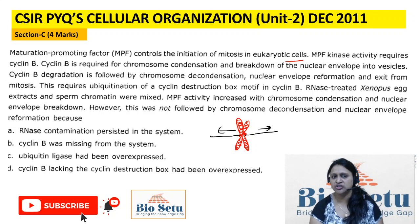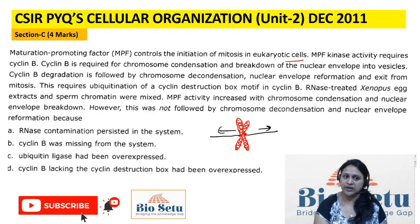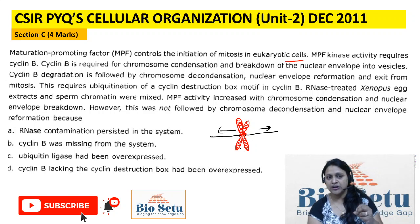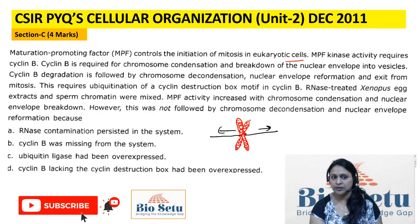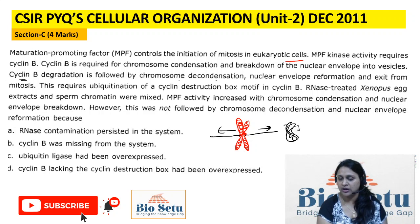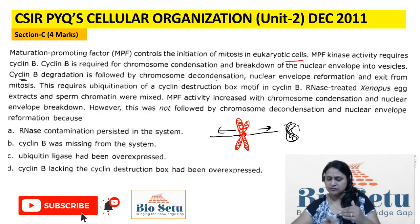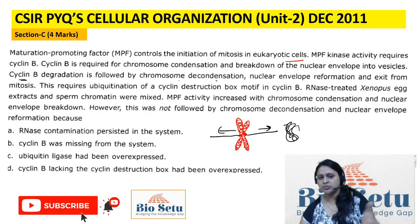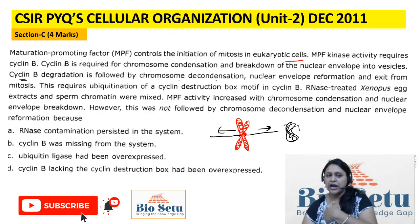Cyclin B degradation is followed by chromosome decondensation. This means that when Cyclin B has done its work — chromosome condensation, nuclear envelope breakdown, everything — and when metaphase is completed and we have to go to anaphase, we have to break Cyclin B. Cyclin B degradation means chromosome decondensation starts; the chromosome begins to return to a chromatin structure. The nuclear envelope starts to reform — exit of mitosis — Cyclin B is broken.